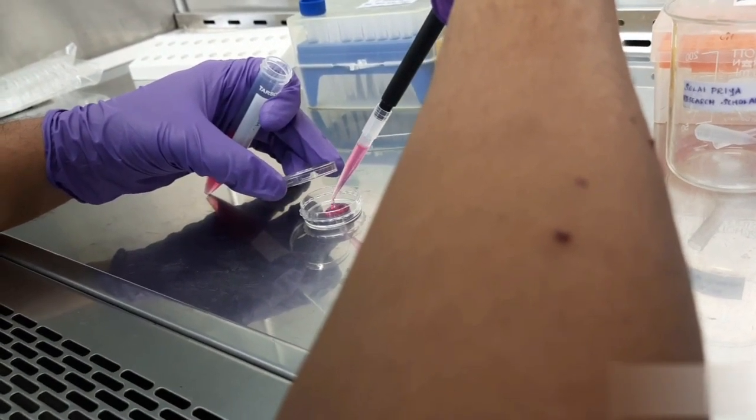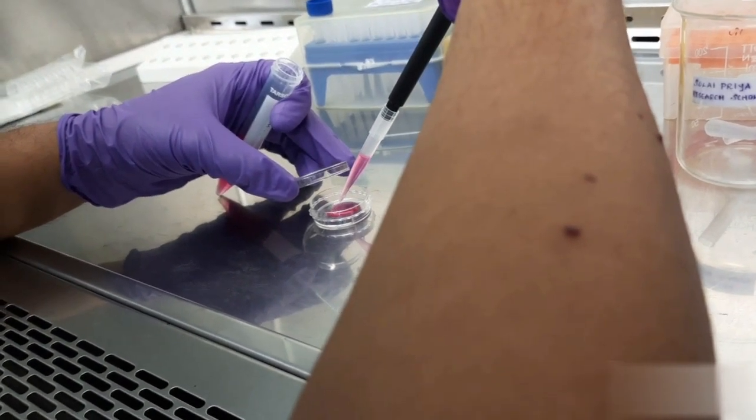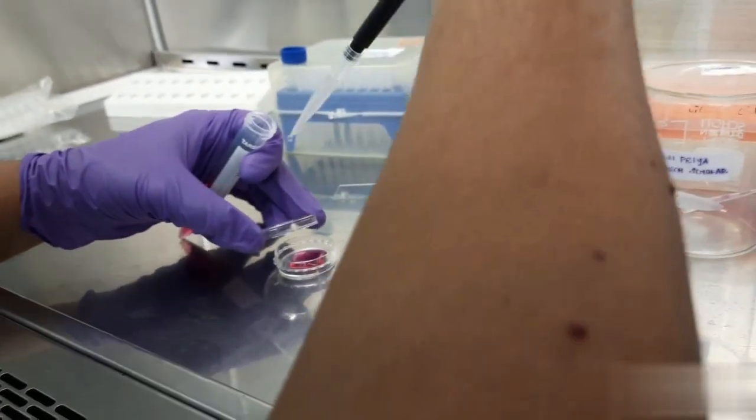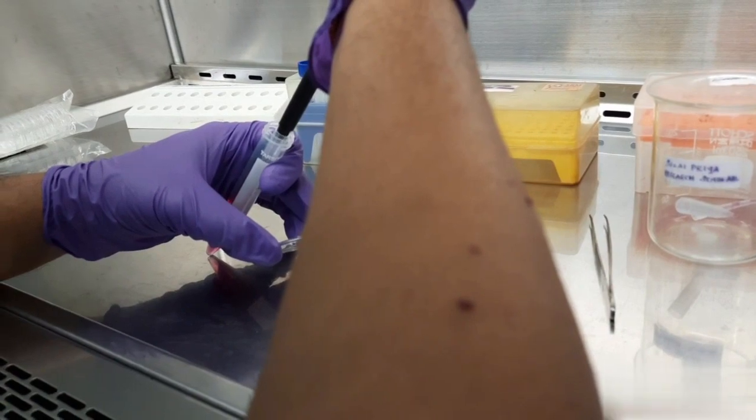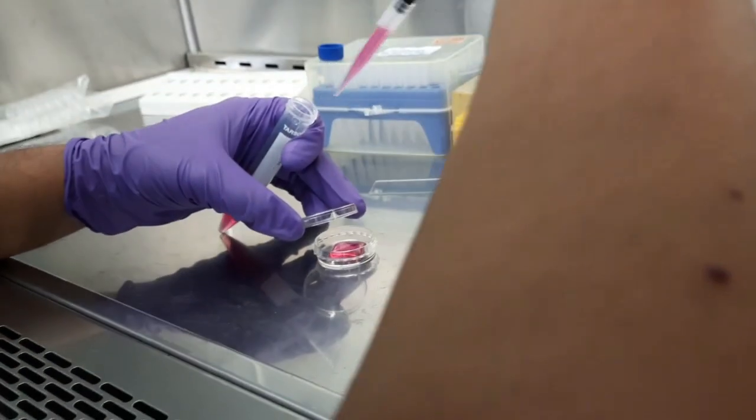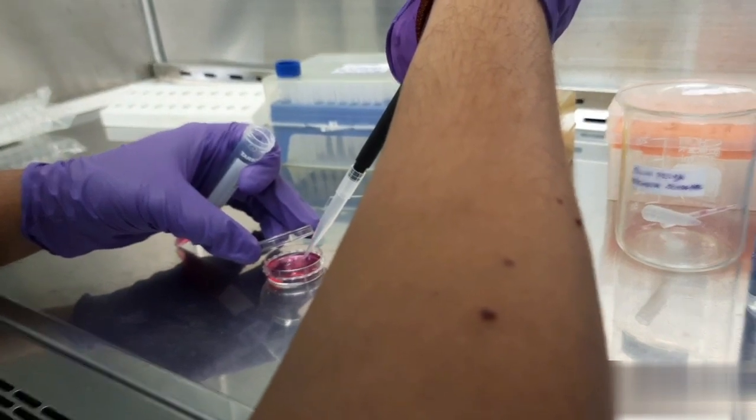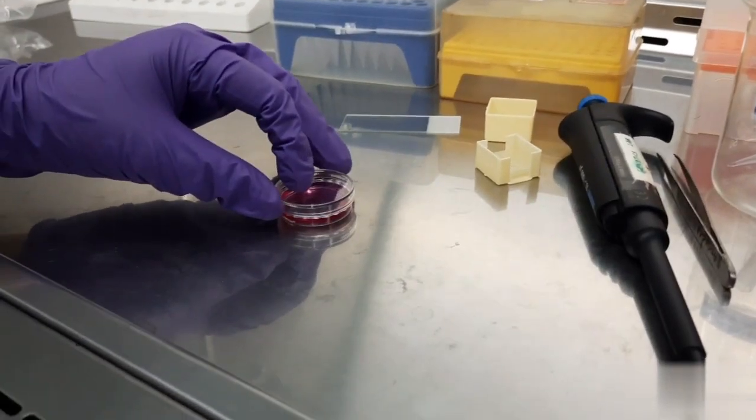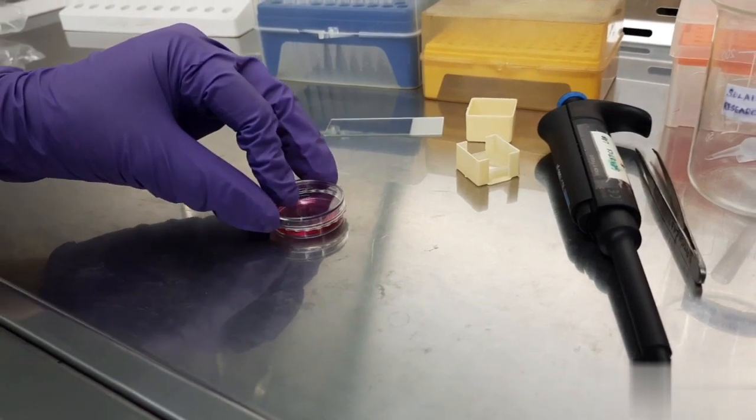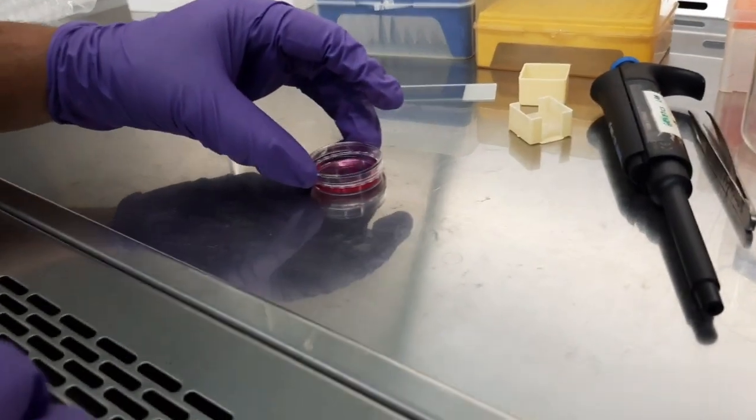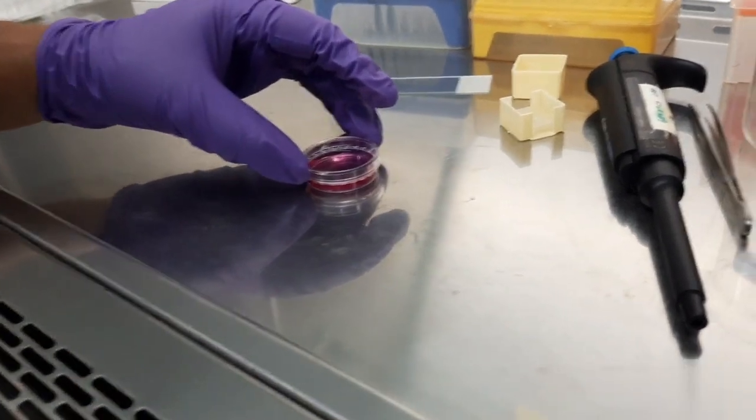This should be done in a gradual manner, gently. We need to gently encircle this once and twice so that the cells get equally dispersed.